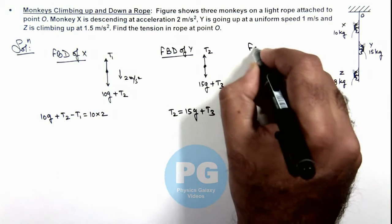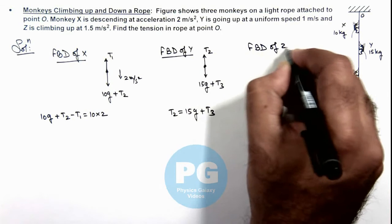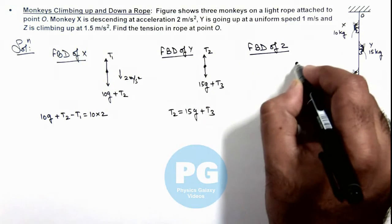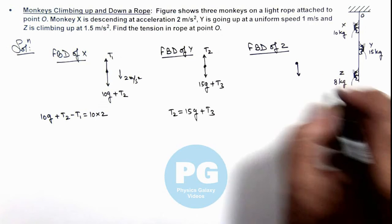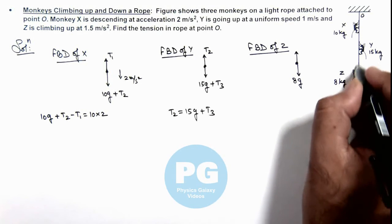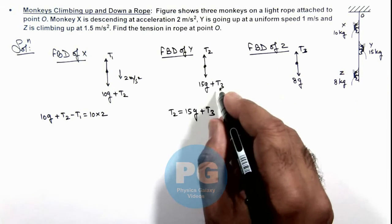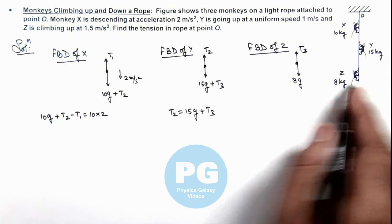Similarly we can also analyze monkey Z, where in the free body diagram its weight is in downward direction 8g, and only tension on it in upward in this part of string that we have taken as T3.